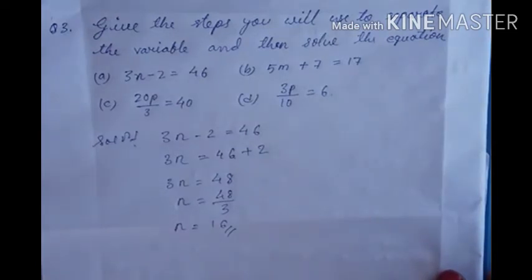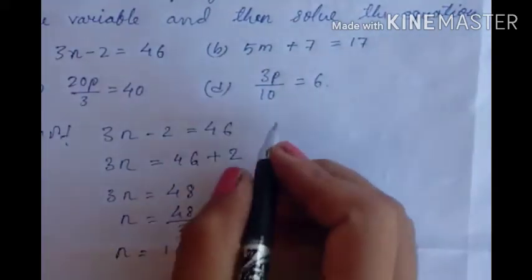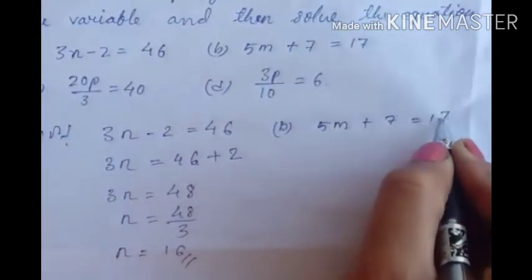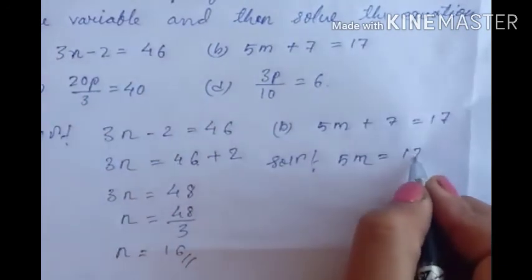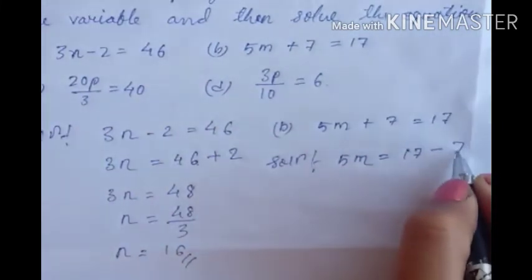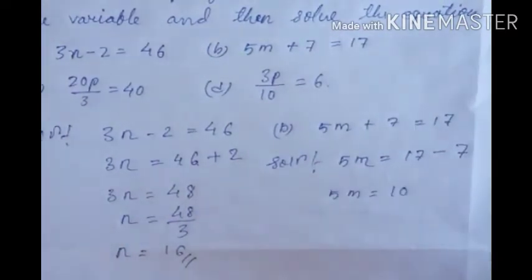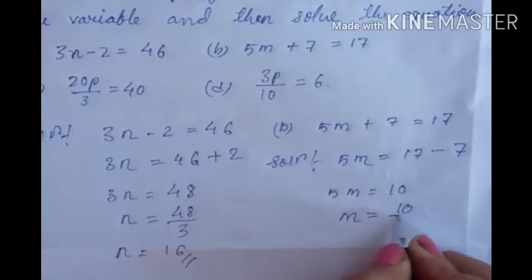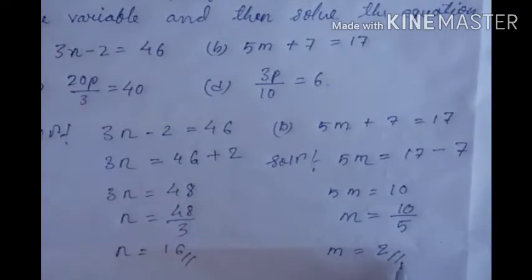For B: 5m plus 7 equals 17. Transpose the constant to the right hand side — plus 7 becomes minus 7. So 5m equals 17 minus 7 equals 10. Now we need only m, so transpose 5 — multiply becomes divide. m equals 10 divided by 5, which is 2. The value of m is 2.